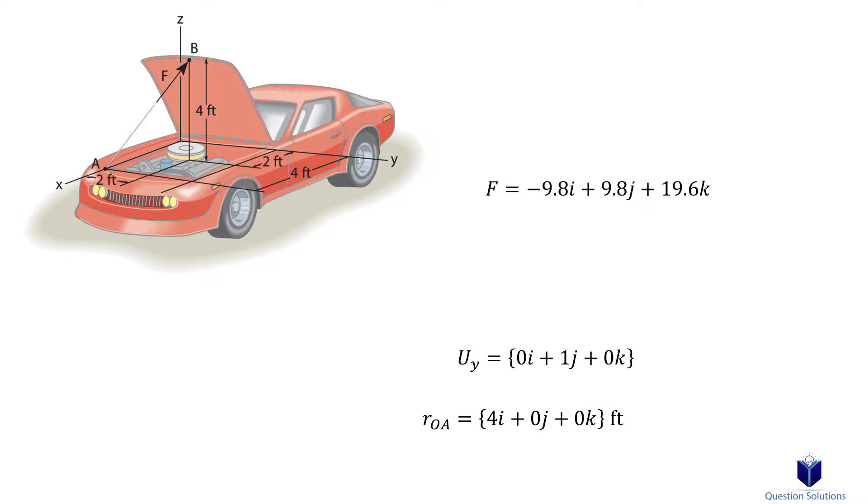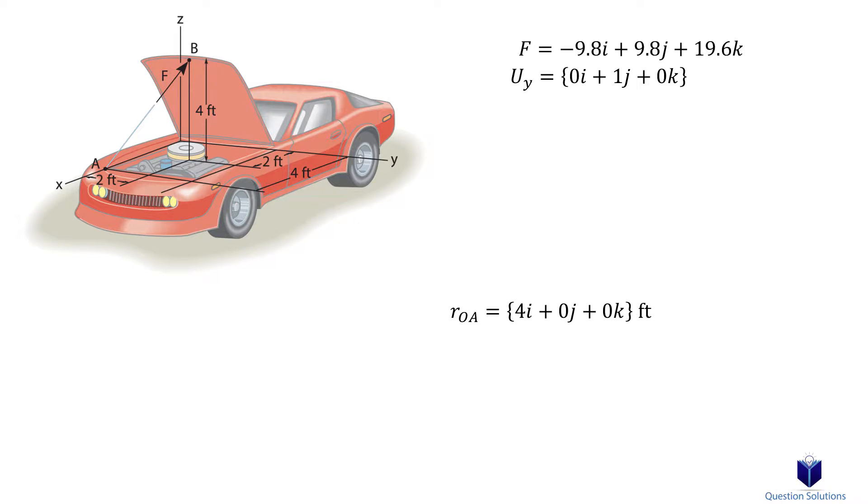We now have our force expressed in Cartesian form, our axis where we are calculating the moment as a unit vector, and a position vector from the origin to the location where the force starts from.